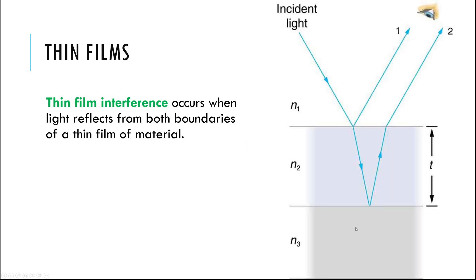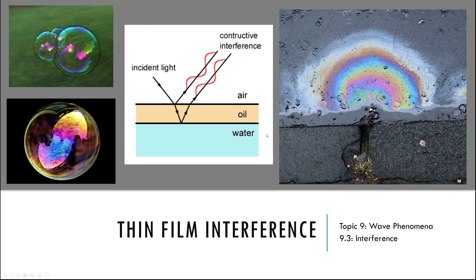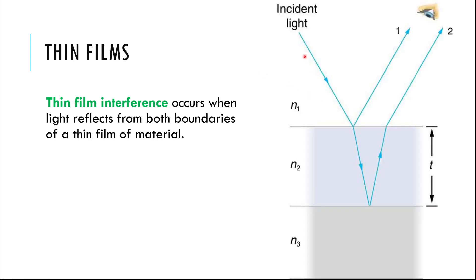Here's what happens with thin film interference. There are three different mediums. Typically the first one is air, and light comes in and reflects from two different boundaries. We have a thin film of material — N2 is our thin film of material. Often it's a film of oil on top of water, and light is coming in from the air and reflecting twice. Light will reflect twice. This is the idea with thin film interference.